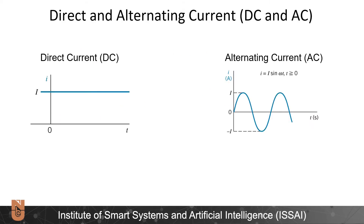We can classify the currents in electrical circuits into two categories: direct and alternating currents, DC and AC. In direct current, the direction and sign of the current does not change — the current is usually a constant value. In alternating current, the sign and polarity of the current changes, so the current might be positive, then negative, then positive again, with different waveforms. The most common is the sinusoidal waveform, due to the way we generate electricity.